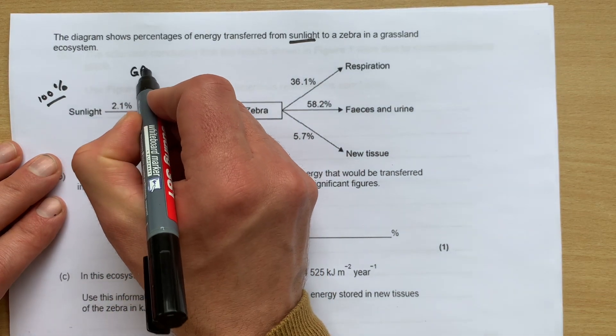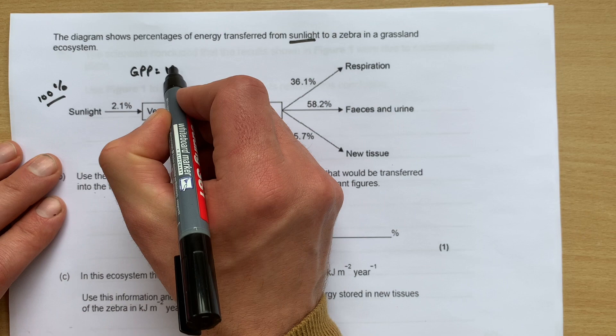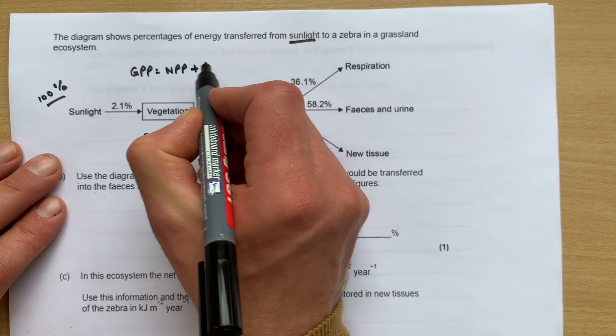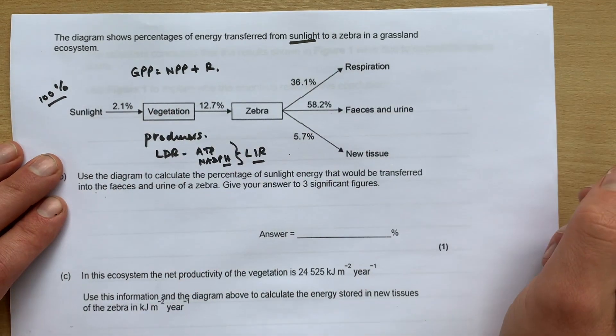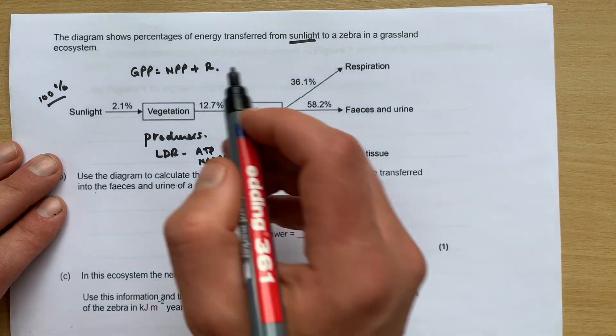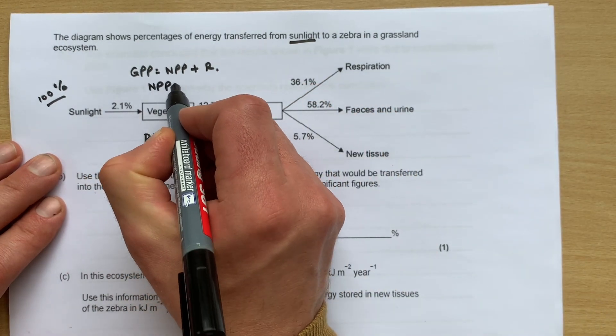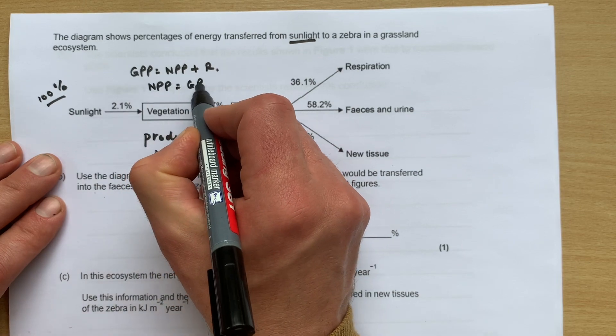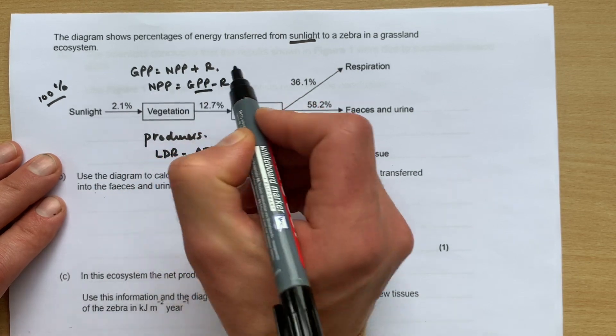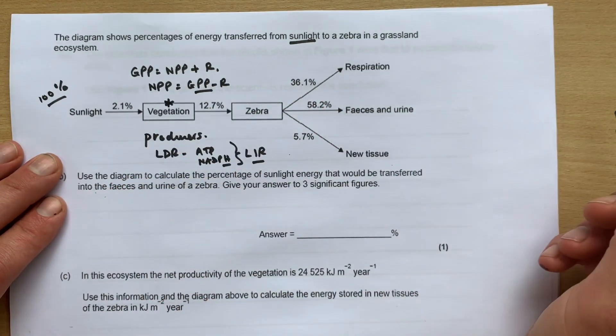So in terms of the biomass of the vegetation, we know the gross primary productivity is the net primary productivity plus respiration rate. So what we could do is work out NPP, which is equal to GPP minus respiration. So that's the dry biomass of the vegetation, and that would be the net primary productivity.